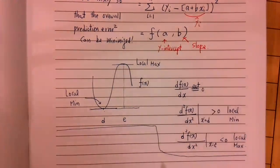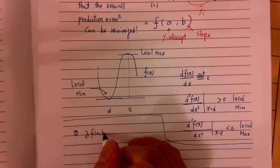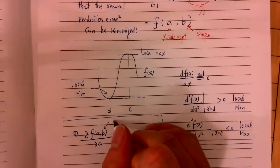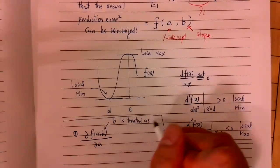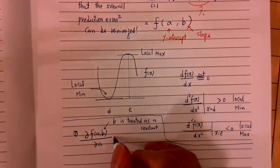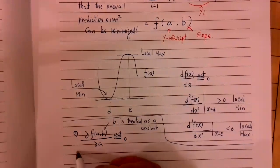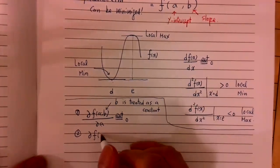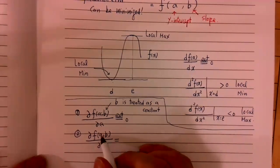All you need to do is: first, take a partial derivative with respect to A — here A is a variable and B is treated as a constant. Set this equal to zero. Second, take the partial derivative with respect to B — B is a variable and A is treated as a constant.